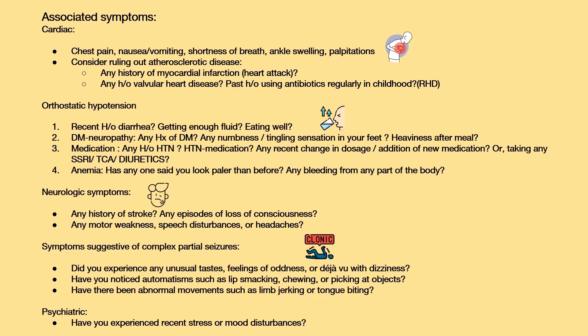Now let's explore associated symptoms. For cardiac-related symptoms, inquire about chest pain, nausea, or vomiting, and consider ruling out atherosclerotic disease. For orthostatic hypotension-related symptoms, rule out recent diarrhea or dehydration. Rule out diabetic neuropathy by asking about any history of diabetes or sensations of heaviness after eating. Ask about certain medications, particularly antihypertensives, SSRIs, TCAs, or diuretics, and any recent changes in doses.